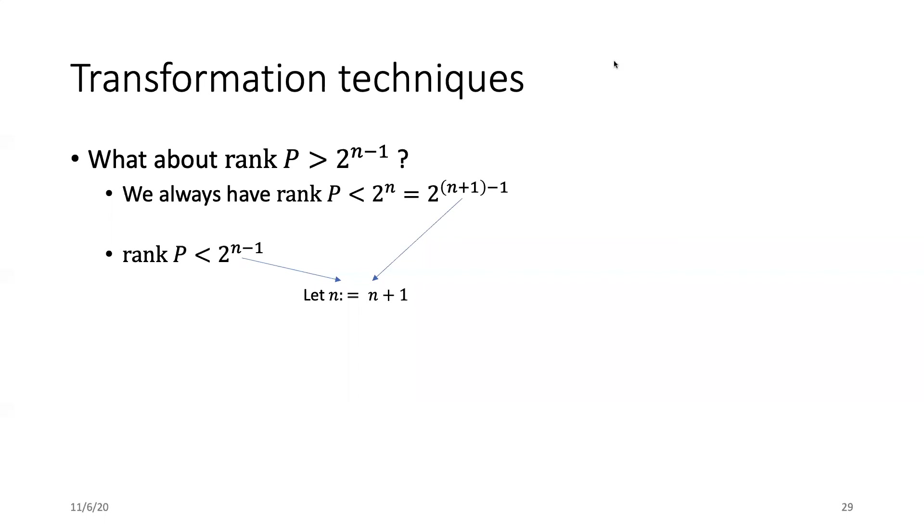The only case left is when rank P is larger than 2^(n-1). In this case, we cannot use intersections because the projection with rank 2^n is the identity operator which will do nothing. But we can observe that the rank of I minus P will be smaller than 2^n, and 2^n is equal to 2^(n+1) minus 1. Recall that in the last case, we have solved cases for rank P smaller than 2^(n-1). Naturally,